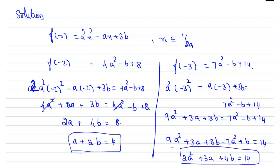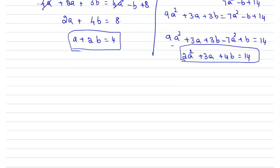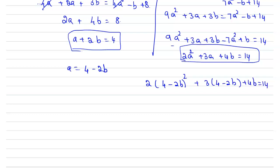From equation one we can express a = 4 - 2b. Substituting into the second equation: 2(4 - 2b)² + 3(4 - 2b) + 4b = 14. Applying the identity (a - b)² = a² - 2ab + b²: 2(16 - 16b + 4b²) + 12 - 6b + 4b = 14, giving 32 - 32b + 8b² + 12 - 6b + 4b = 14.